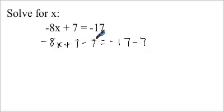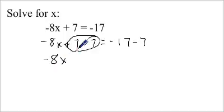So here, because this is equal to 0, I can just get rid of that. Negative 8x plus 0 is the same as negative 8x. And then I've got is equal to negative 17 minus 7. So that's going to be negative 24.